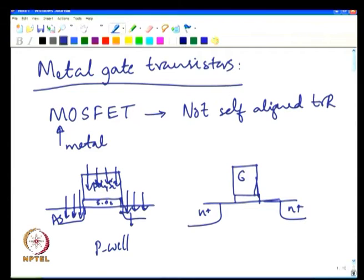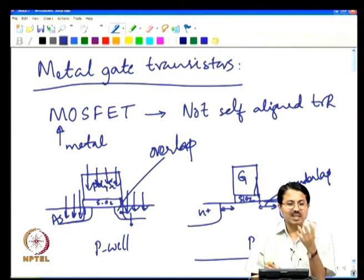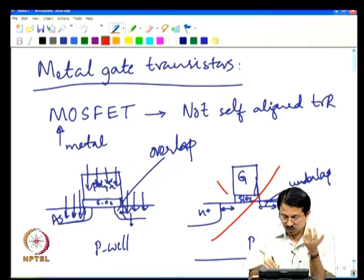If this is your gate and this is your SiO2, and N+ region is here and N+ region is here — this is all P region — and you somehow ended up with this region which we call underlap, as opposed to having source and drain going beyond the gate edge. If you have underlap, where the gate does not cover some regions of the transistor, you would not be able to create an inversion channel — your transistor will not conduct. So this is certainly a no-no.